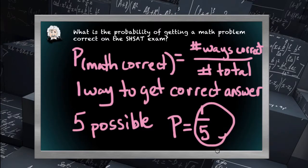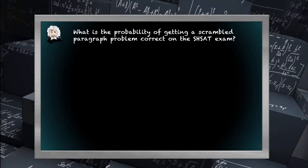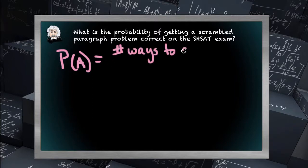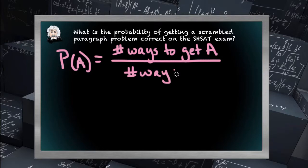Now that part was easy enough. But what is the probability of getting a scrambled paragraph problem correct on the SHSAT exam, assuming of course no special knowledge of the particular problem? Ask your coach, they might even be stumbled by this problem. Again, the probability of event A is going to be the number of ways to get event A to occur divided by the number of ways possible in total.